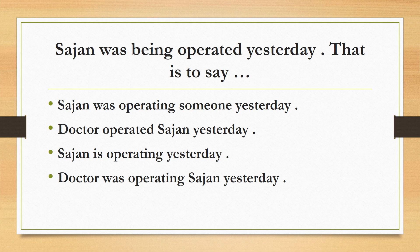Sajan was being operated yesterday. That is to say Sajan was operating someone yesterday, doctor operated Sajan yesterday, Sajan is operating yesterday, doctor was operating Sajan yesterday. The correct answer is 'doctor was operating Sajan yesterday'. In passive voice, object plus was/were plus being plus verb 3. The active form is subject plus was/were plus verb 4 plus object. According to the options, option D, doctor was operating Sajan yesterday.